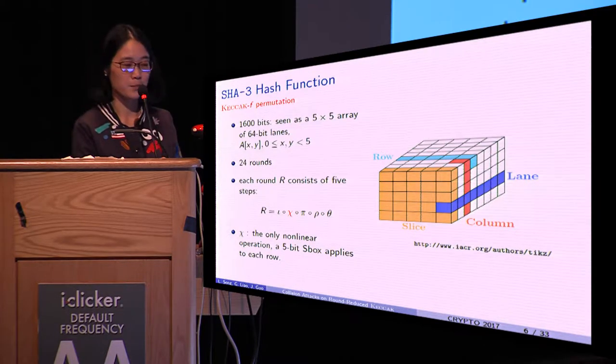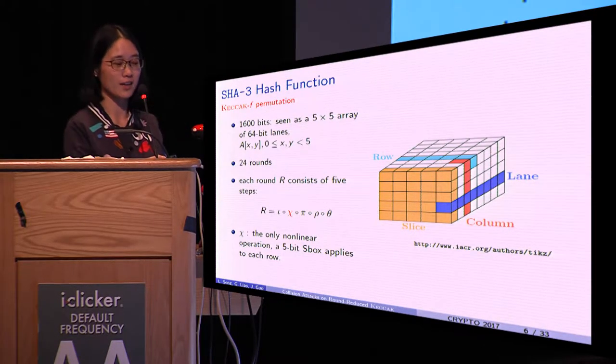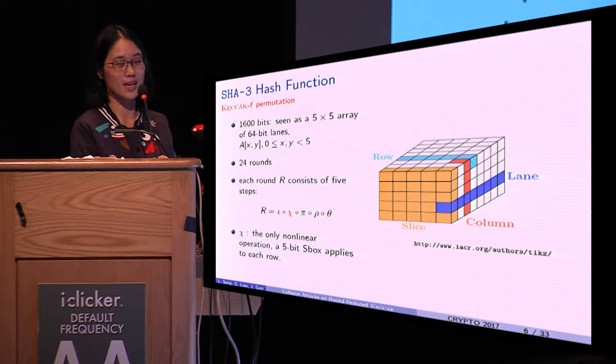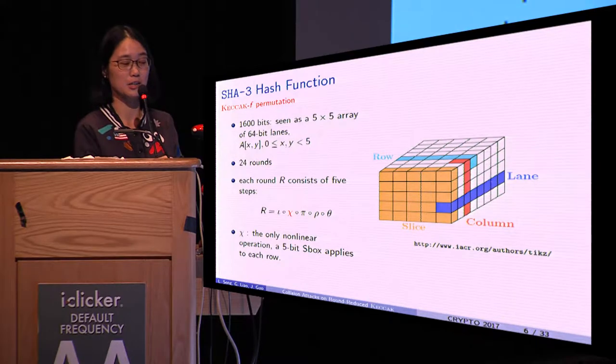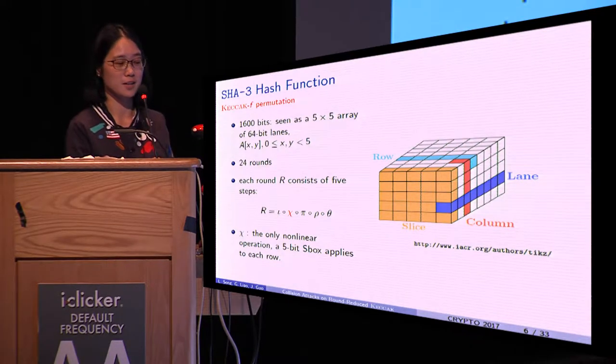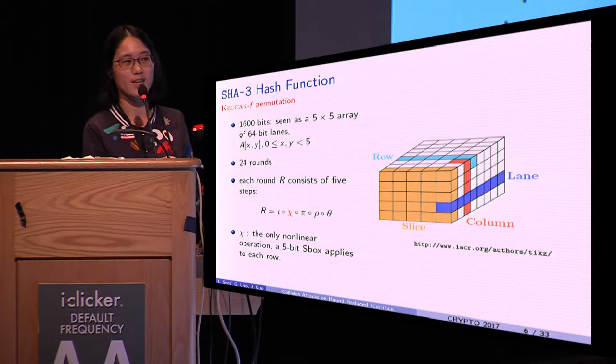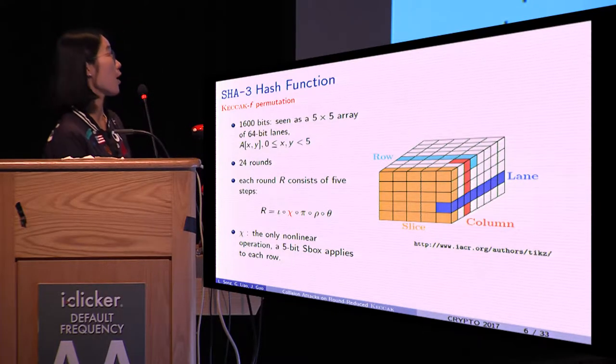The underlying permutation used in KECCAK is called KECCAK-F. It has an internal state of 1,600 bits, which can be seen as a 5×5 array of 64-bit lanes. It iterates 24 rounds.